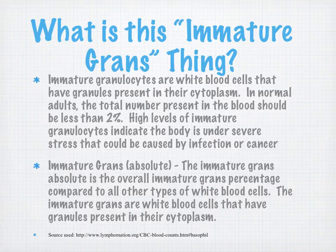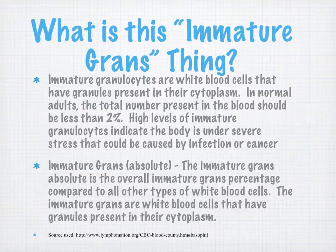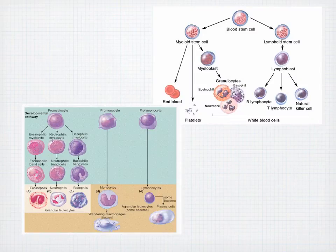What is this immature grands thing? Immature granulocytes are white blood cells that have granules present in their cytoplasm. In normal adults, the total number present in the blood should be less than 2%, because high levels of immature granulocytes indicates something's going on — severe stress, infection, or cancer. The absolute count of immature grands is the overall immature grands percentage compared to all other types of white blood cells.